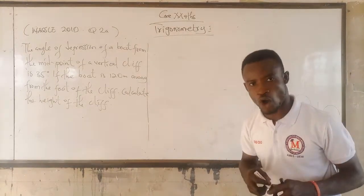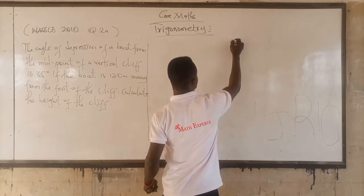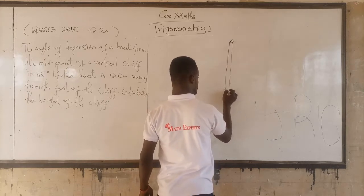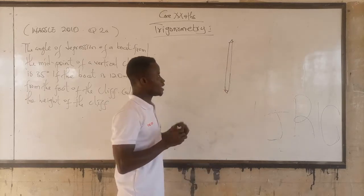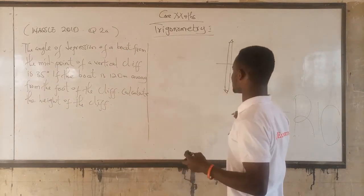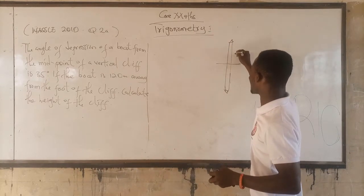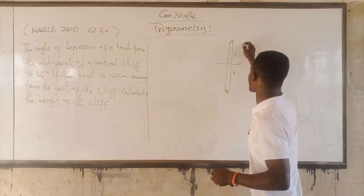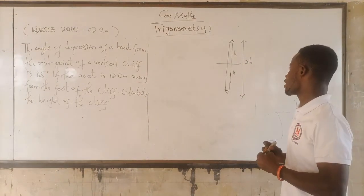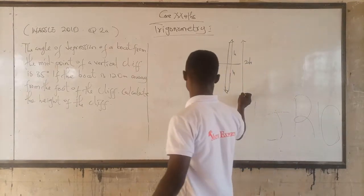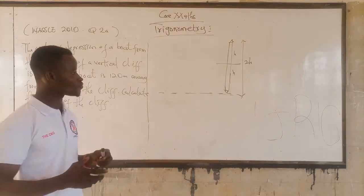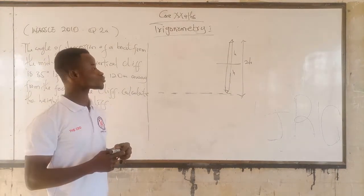First of all, let's see how the cliff is. The cliff is like this. The angle of depression is starting from the middle of the cliff. So if the height here is H, then the height here will also be H. But the whole height will be 2H. And this is going to represent the foot of the cliff.